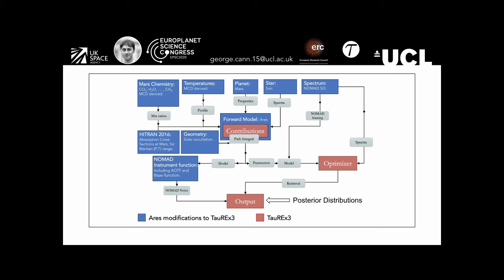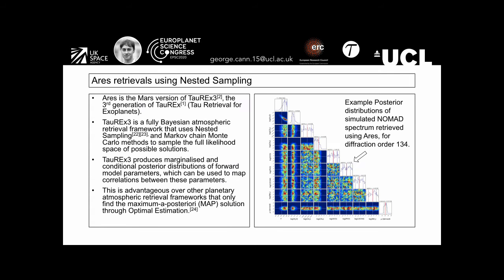This allows us to simulate NOMAD spectra. The final output is a set of marginalized and conditional posterior distributions of NOMAD solar occultation measurements. ARIES is the Mars version of TAREX 3.